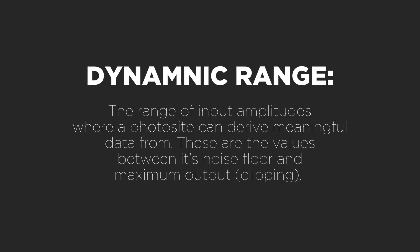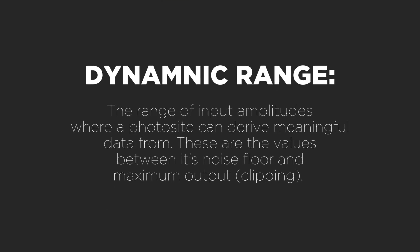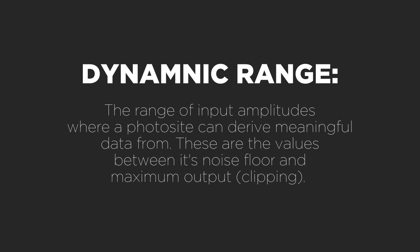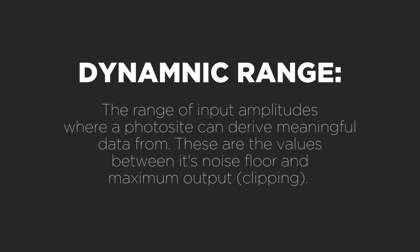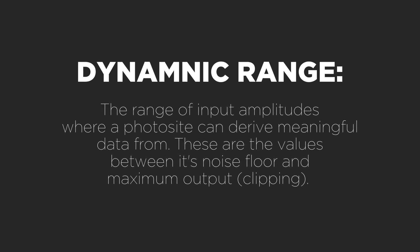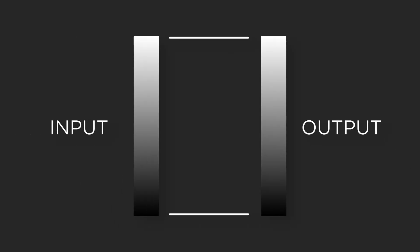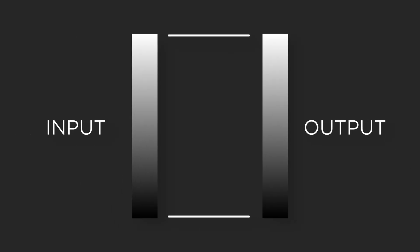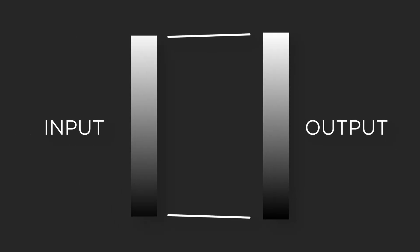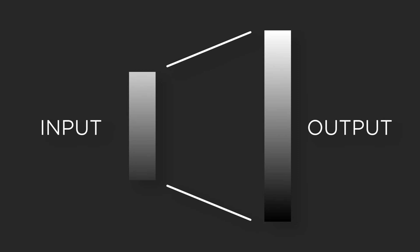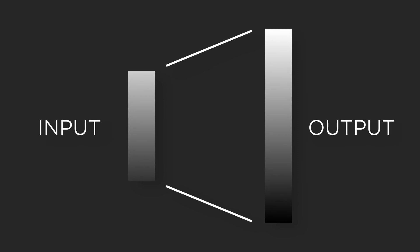So interesting side note: when we talk about the dynamic range of a camera, that is actually how many values fit in between that lowest point that a photosite can read before it turns into noise in the low end, and the highest point before it turns into white. So if a photosite can encompass a large range of things in there, that's called a lot of dynamic range. And if it goes from zero to clipping really fast, that's a low dynamic range.